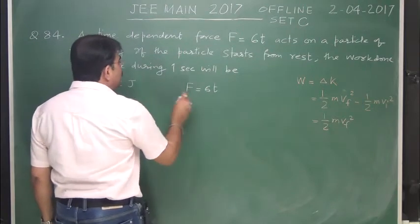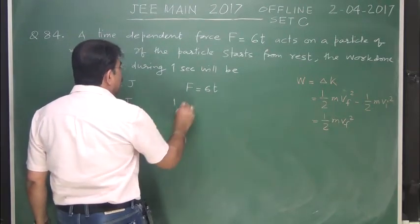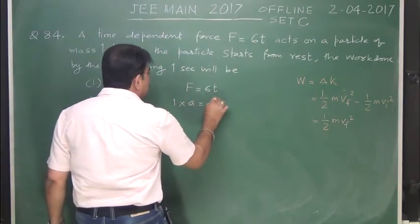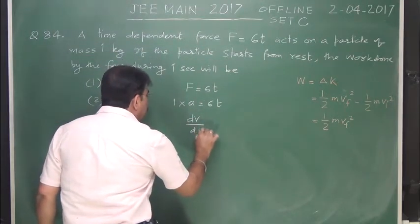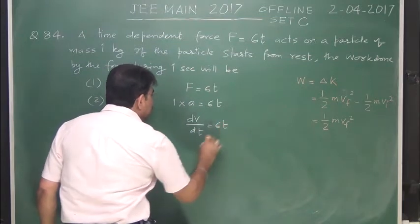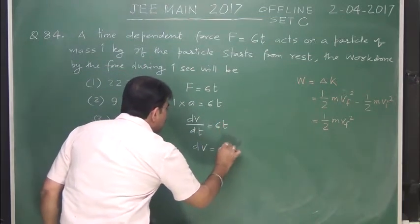Force is equal to mass into acceleration. Mass kitna 1 kg? So acceleration is equals to 6t. Aisa licksakta hai, or acceleration ko phir ham licksakta hai, dv dt is equals to 6t, to dv is equals to 6t dt.